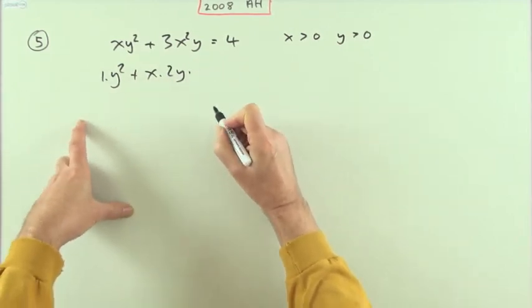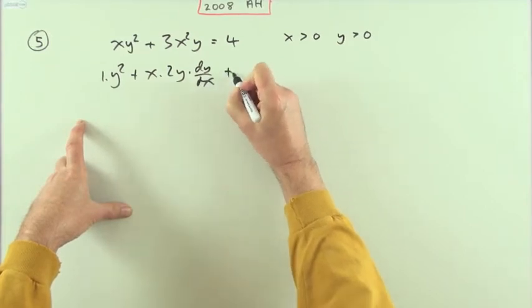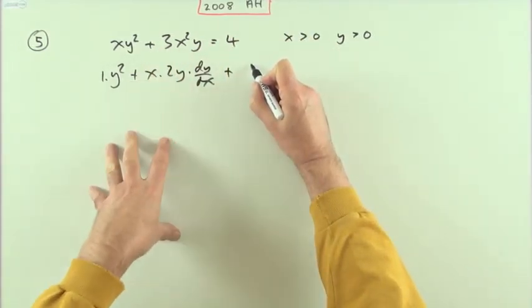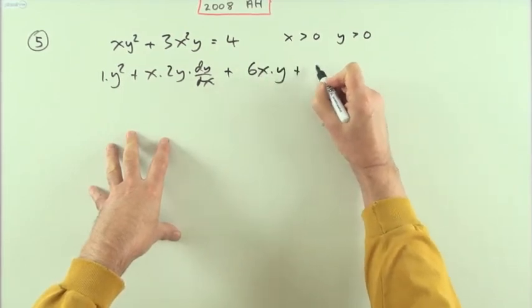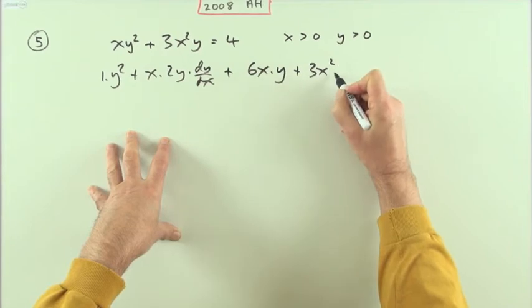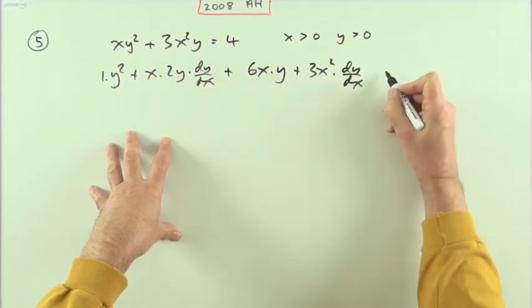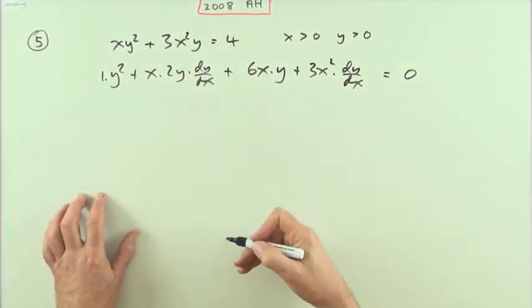Then leave the first one alone and differentiate that. Well the derivative with respect to y would be 2y, and since that's also a function of x then it'll be dy by dx. Plus, again, another product. So I've got differentiate the first part, so I'll call that 6x, leaving the y alone.